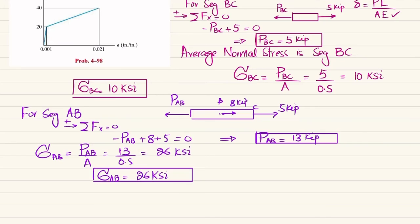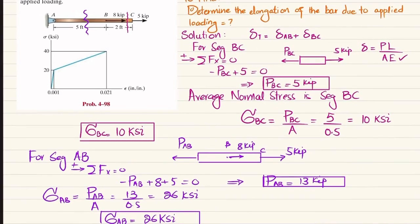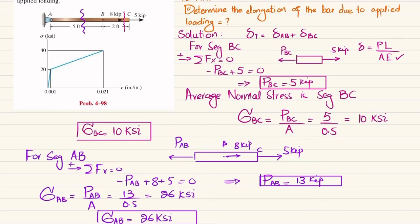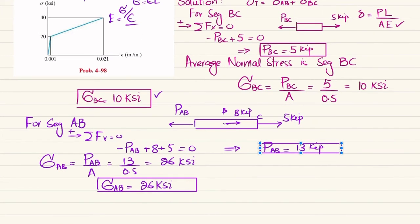Now we find the strain in segment BC. We know that E equals stress divided by strain, so we use the ratio of stress to strain. For segment BC, sigma_BC divided by epsilon_BC equals 10 divided by epsilon_BC. We use the slope of the stress-strain diagram to find this ratio.